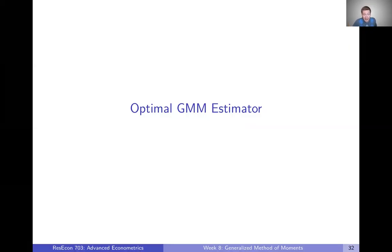Now that we've defined the GMM estimator, seen an example, and talked about its properties, we have all the pieces we need to talk about the optimal GMM estimator — specifically, using the optimal weighting matrix to get what we might call the optimal of all GMM estimators.